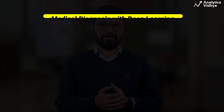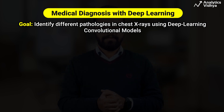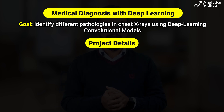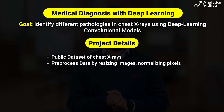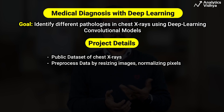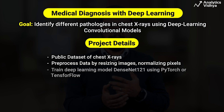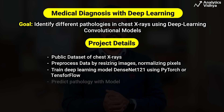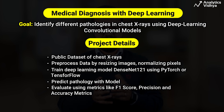This project aims to identify different pathologies in chest X-rays using deep learning convolutional models, learning how deep learning is used in radiology. We use a public dataset of chest X-ray images and pre-process the data by resizing images and normalizing pixels to make it ready for training. We then train the deep learning model DenseNet121 using PyTorch or TensorFlow to predict pathology, and evaluate the model using F1 score, precision, and accuracy metrics. This project helps in medical diagnosis using deep learning.